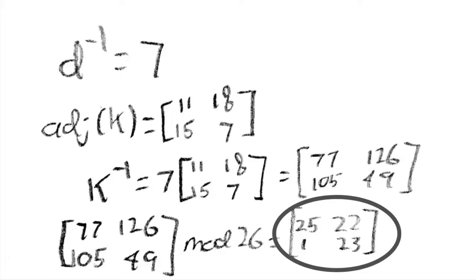Finally, to find k inverse, simply multiply the adjugate matrix we found earlier by the inverse of the determinant, and modulo by 26 once more. In this instance, our k inverse is equal to 25, 22, 1, and 23.